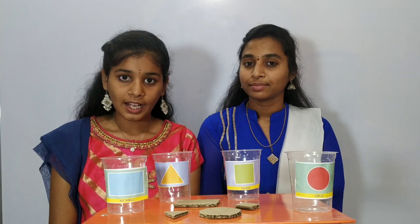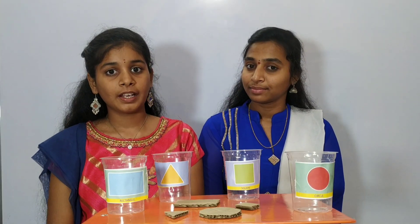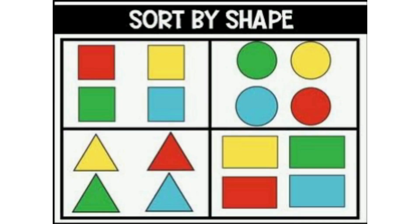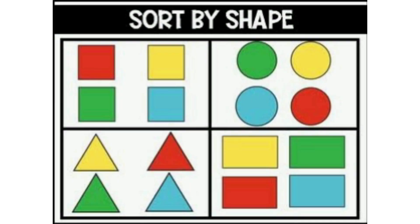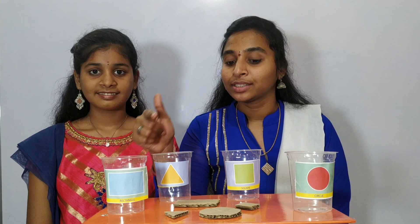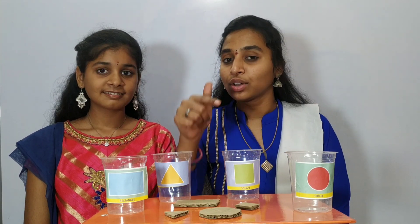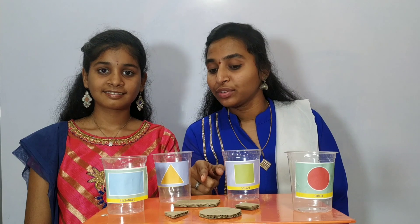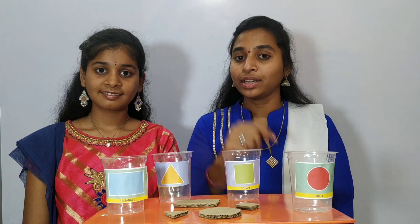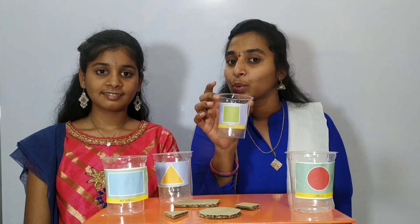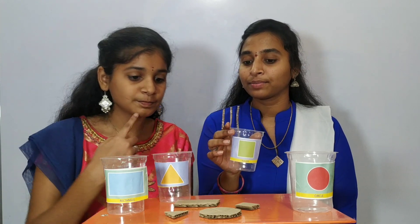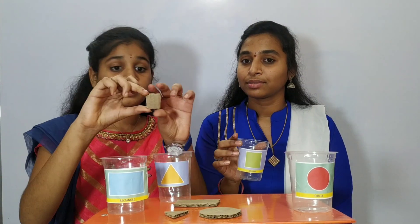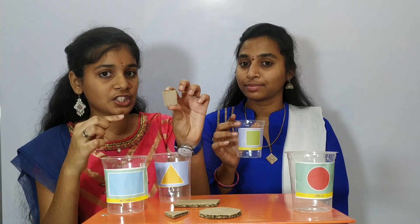Now let us get into the topic sorting of shapes. Here are some glasses on which stickers of different shapes are stuck. Try to identify the shapes and put items in the correct glass. Here is the square-shaped glass — I got it, this is the square shape.